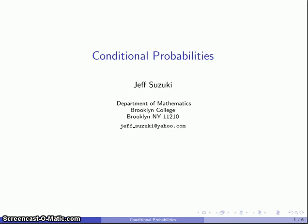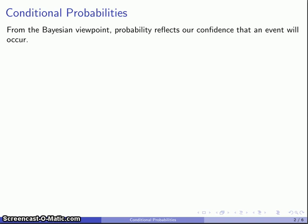We're going to take a look at an extremely important concept in probability known as conditional probabilities. This is best looked at from a Bayesian viewpoint. From a Bayesian viewpoint, the probability of an event reflects the confidence that we have that the event will occur the next time we run the random experiment.